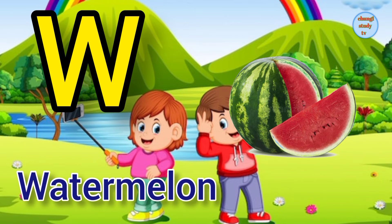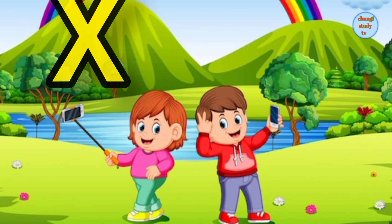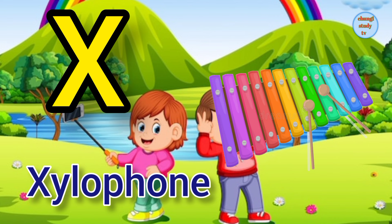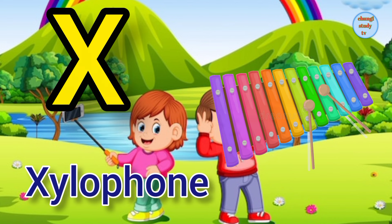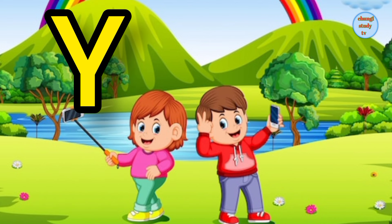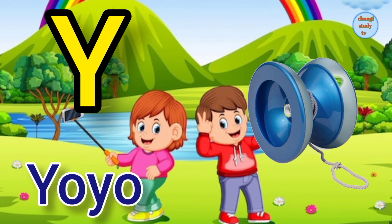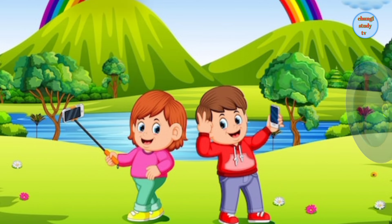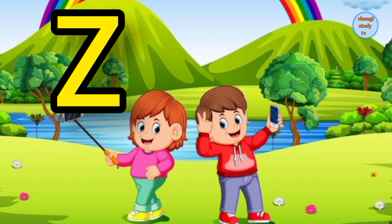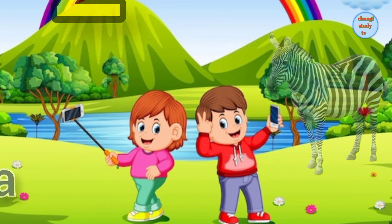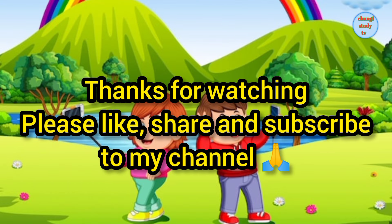W for watermelon, watermelon means tarbuj. X for xylophone, xylophone means xylophone. Y for yoyo, yoyo means yoyo. Z for zebra, zebra means chithidhar ghoda. Thanks for watching.